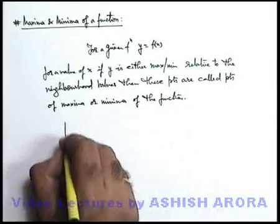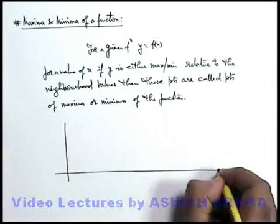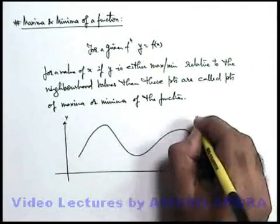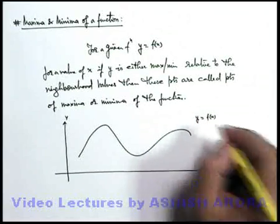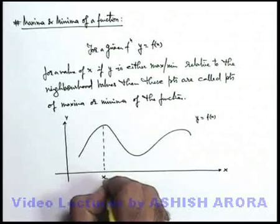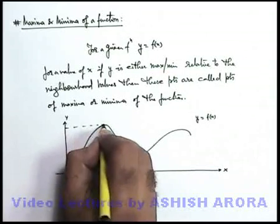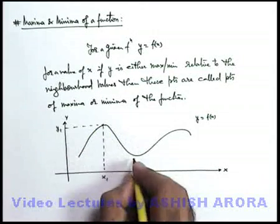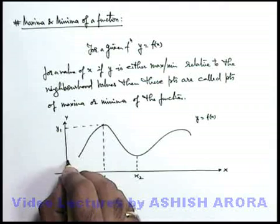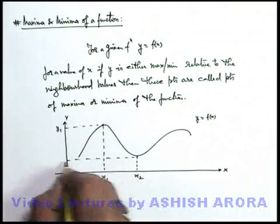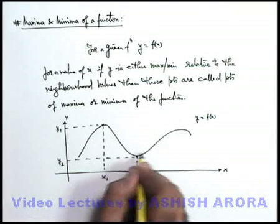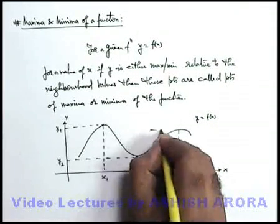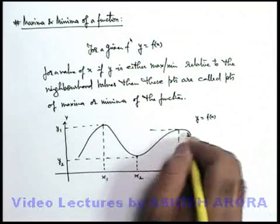Graphically, these points can be very easily seen. If we draw the graph of a function in x and y, this is the curve of a function y = f(x). You can see at a particular value of x, say x1, the value of y — say it is y1 — is maximum compared to neighborhood values. Similarly, at point x2, the value y2 is minimum compared to neighborhood values. And at x3, the value of y is again maximum compared to neighborhood values.